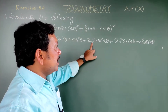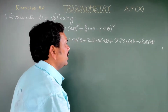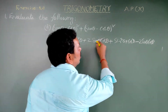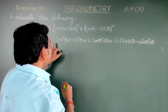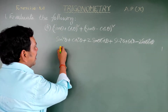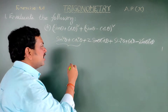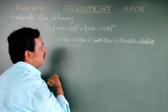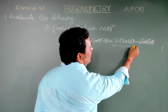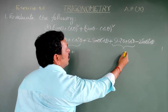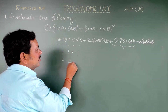Here, plus 2 sin theta cos theta and minus 2 sin theta cos theta both cancel. The remaining terms: sin²theta plus cos²theta is the first trigonometric identity, which equals 1, plus sin²theta plus cos²theta again equals 1. So 1 plus 1 equals 2.